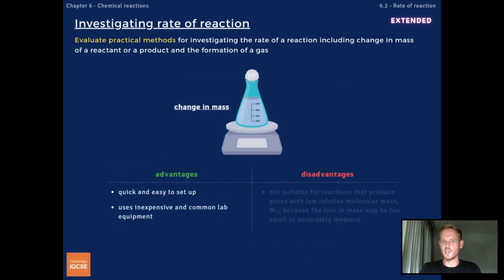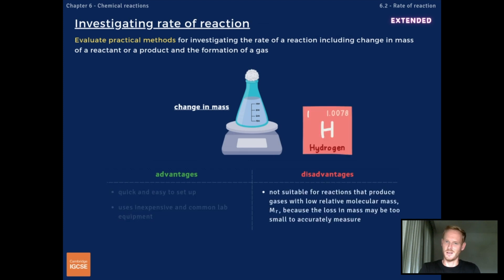Finally, measuring change in mass using a balance and open flask is easy to set up and uses inexpensive and common laboratory equipment. However, it's not suitable for reactions that produce gases like hydrogen, which has a very low relative molecular mass. This is because the loss in mass incurred may be too small to accurately measure.